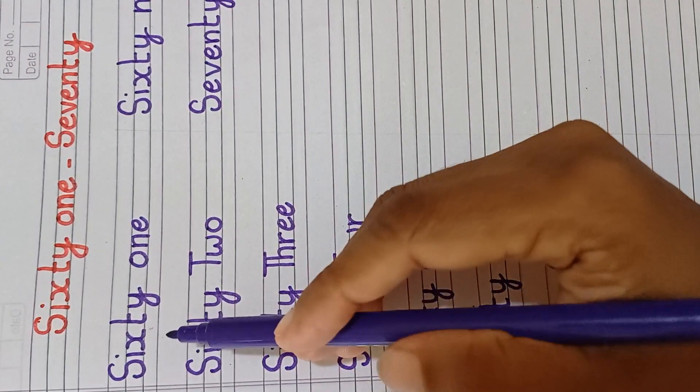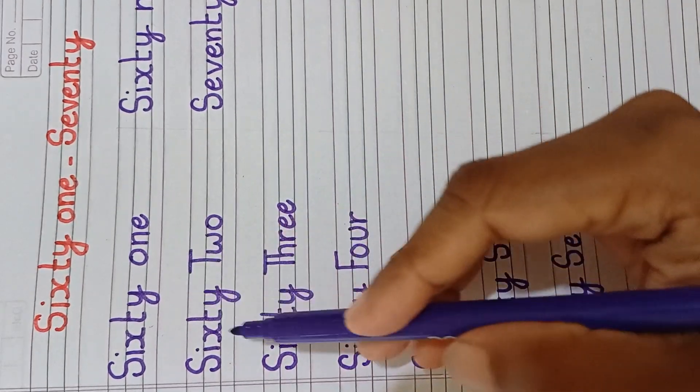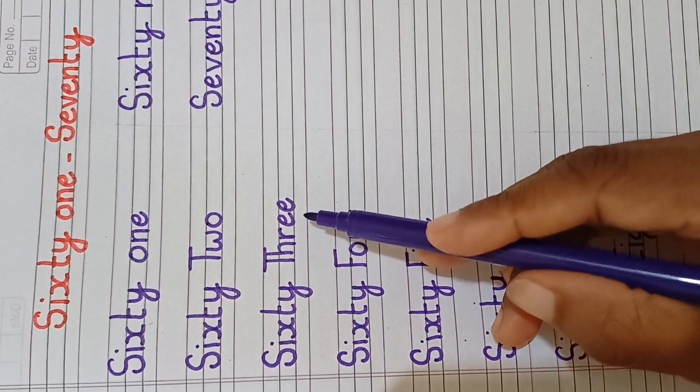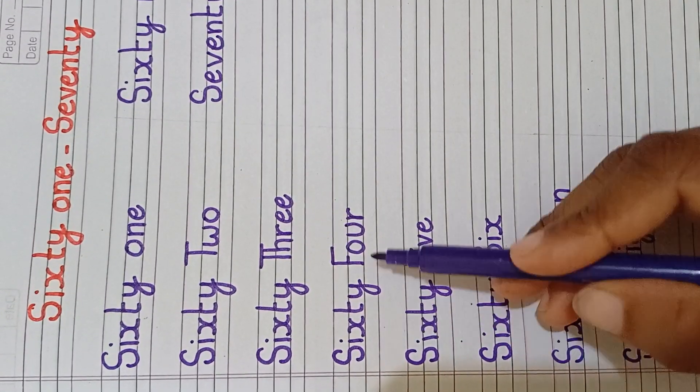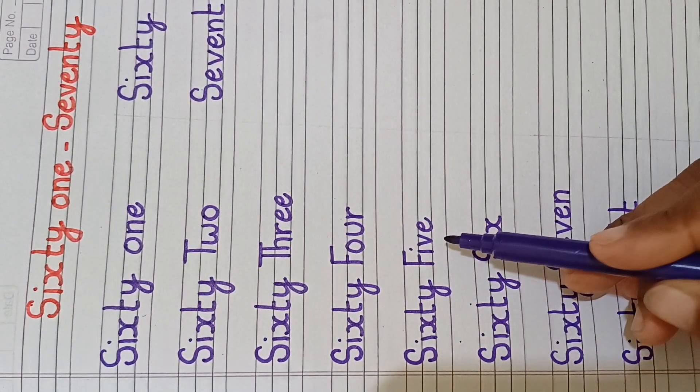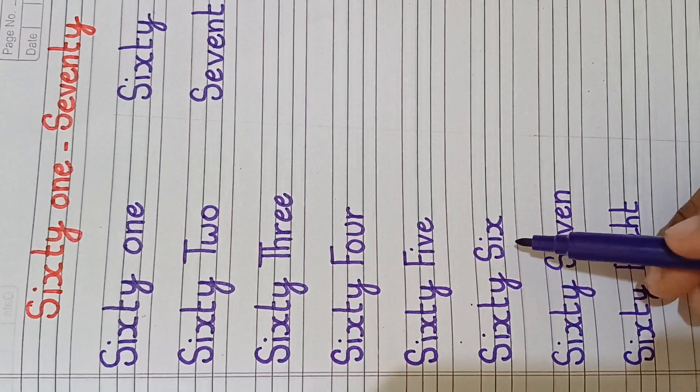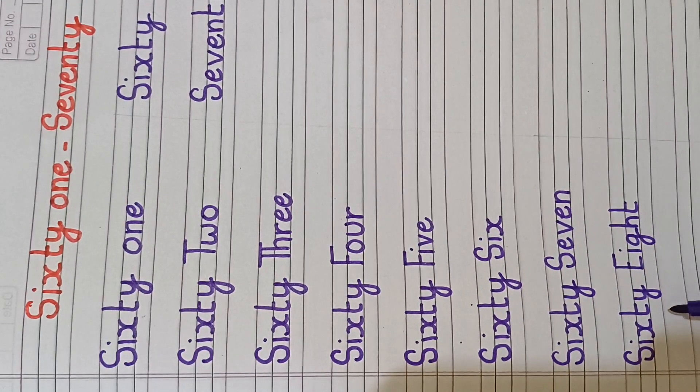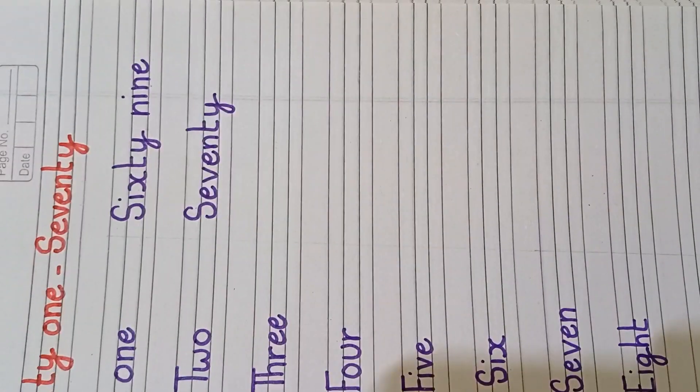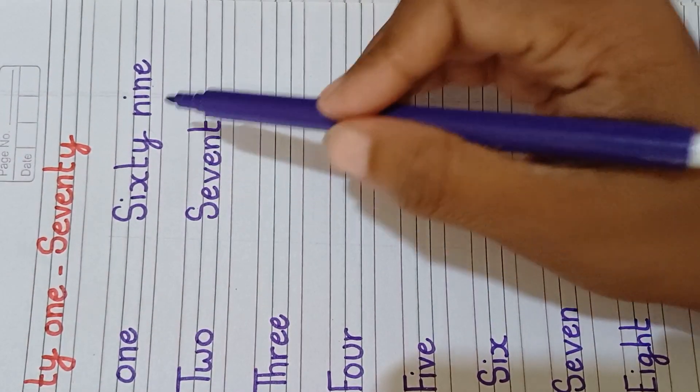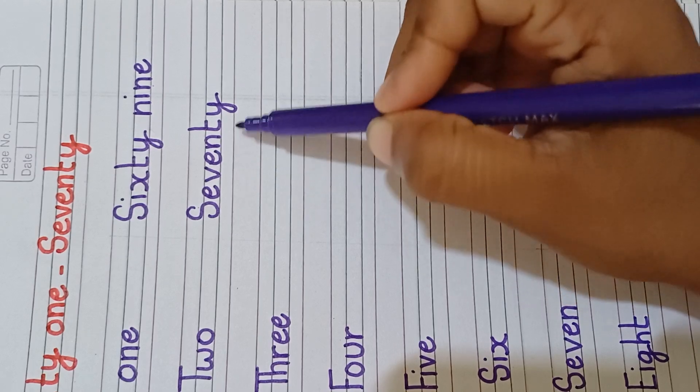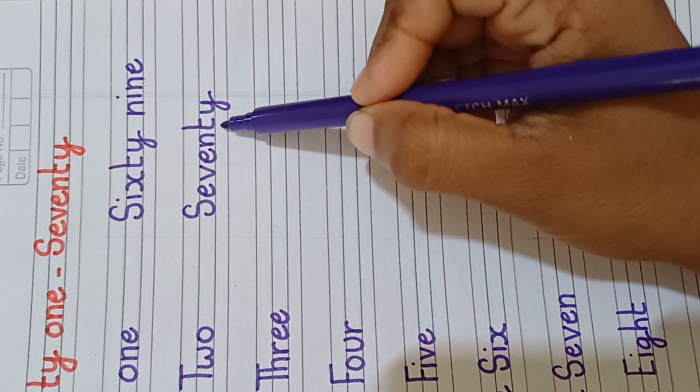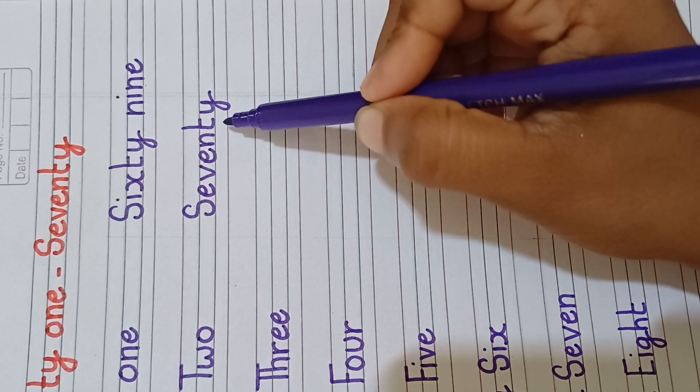Again I read it. Sixty-one, sixty-two, sixty-three, sixty-four, sixty-five, sixty-six, sixty-seven, sixty-eight, sixty-nine, seventy. S, E, V, E, N, T, Y, seventy.